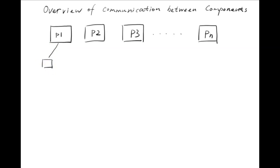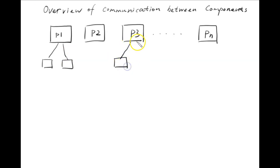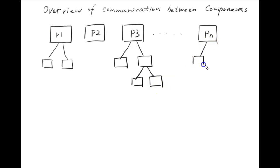For example, page 1 has two sub-components, and page 2 does not have any sub-components or non-page components. Page 3 is even more complicated and has a component tree like this, and page n may have something like that. So now the interesting thing happens.